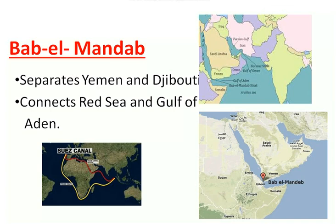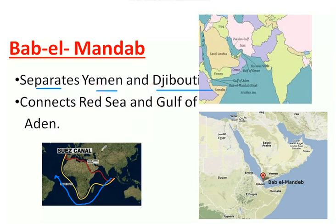Bab el-Mandab is very important for economic activities as it is a shortcut route — the key to the Mediterranean — connecting the Suez Canal route to America and western nations. Without this route, the sea journey would be much longer. It separates Yemen from Djibouti in Africa. It connects the Red Sea to the Gulf of Aden and then to the Suez Canal through the Mediterranean. It is one of the most important and busiest sea trade routes in the world.